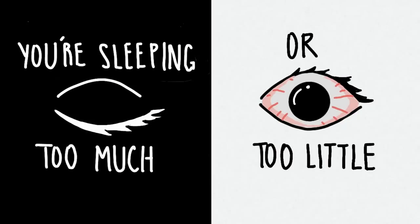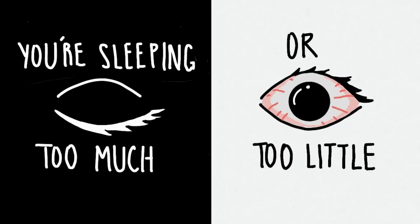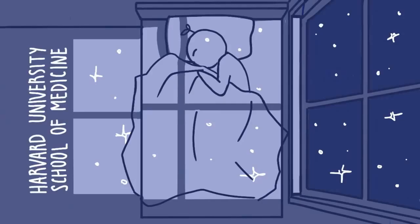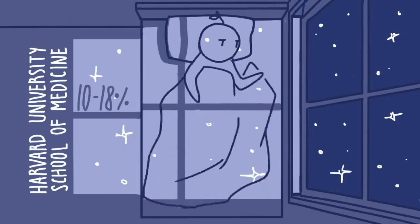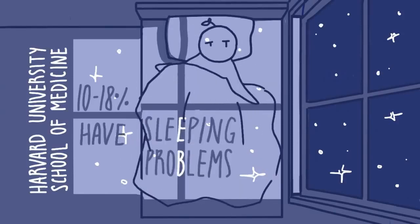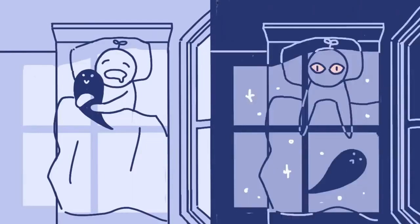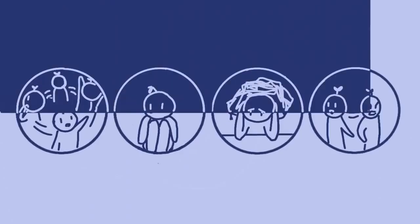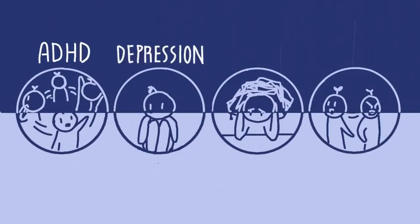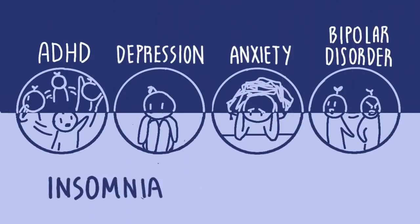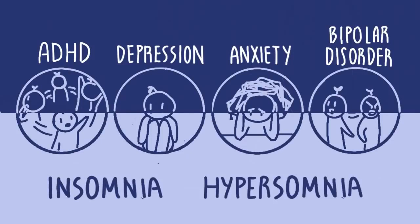Number seven: You're sleeping too much or too little. The Harvard University School of Medicine believes that 10 to 18% of the general population has problems sleeping. However, Harvard's med school stated either sleeping too much or too little is two or three times more common in people who suffer from a mental illness. The Harvard med school stated about 50% of people who live with ADHD, depression, anxiety, or bipolar disorder suffer from insomnia or hypersomnia, which means sleeping too much.